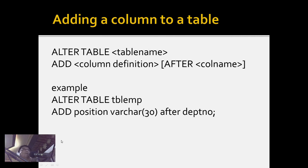We can also modify a table we've already created. To add a column, use ALTER TABLE followed by the table name, then ADD and the column definition. Optionally, we can specify where the column will be placed using AFTER and a column name. For example: ALTER TABLE tblm ADD position VARCHAR(30) AFTER depno.